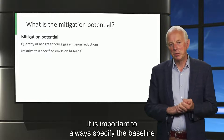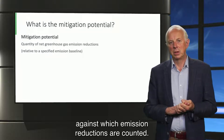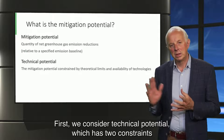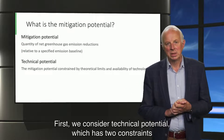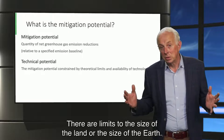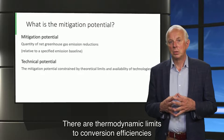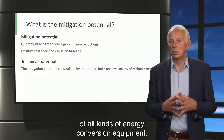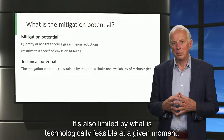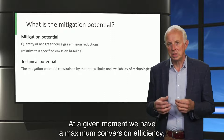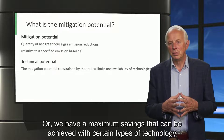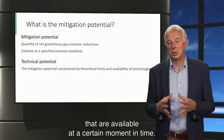It is important to always specify the baseline against which emission reductions are counted — we will get back to that later in this video. First, we consider a technical potential, which has two constraints. One is all kinds of theoretical limits: there are limits to the size of the land or the size of the earth, and there are thermodynamic limits to conversion efficiencies of all kinds of energy conversion equipment. It is also limited by what is technologically feasible at a given moment — for example, a maximum conversion efficiency of solar panels.